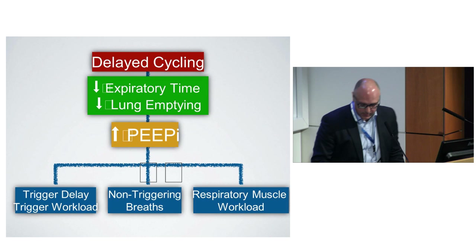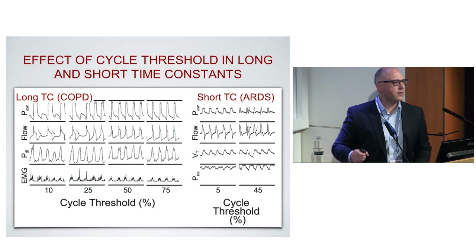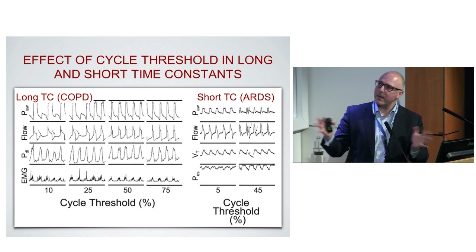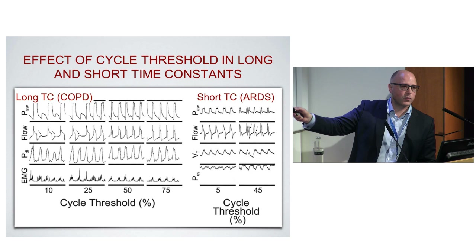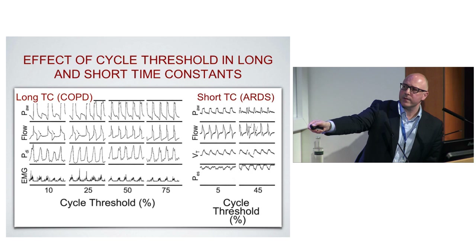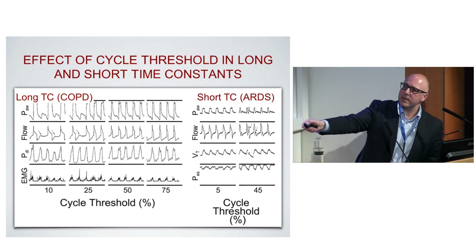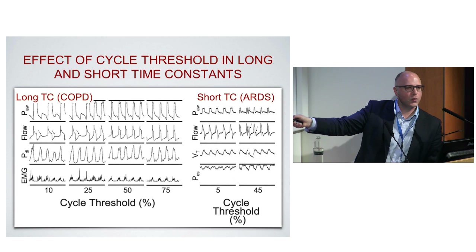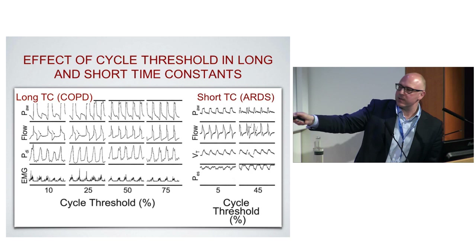But it depends on the patient. A patient with a long time constant, such as COPD, takes a long time to deflate — they need short inspiratory time and much longer expiratory time. Contrast this with ARDS, which has a short time constant with rapid filling and emptying. If you delay cycling off in COPD, intrinsic PEEP accumulates to the point of missed breaths. If you make the inspiratory time too long in ARDS, you get double triggering. If too short in ARDS, you also get double triggering.